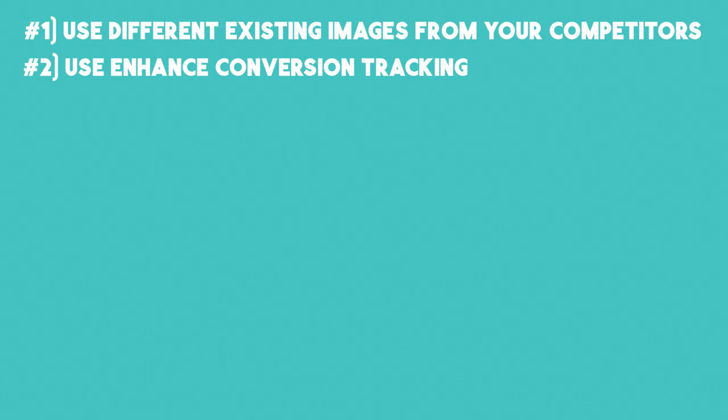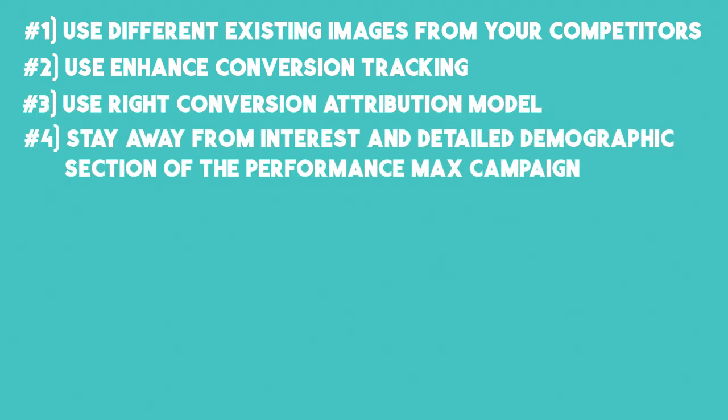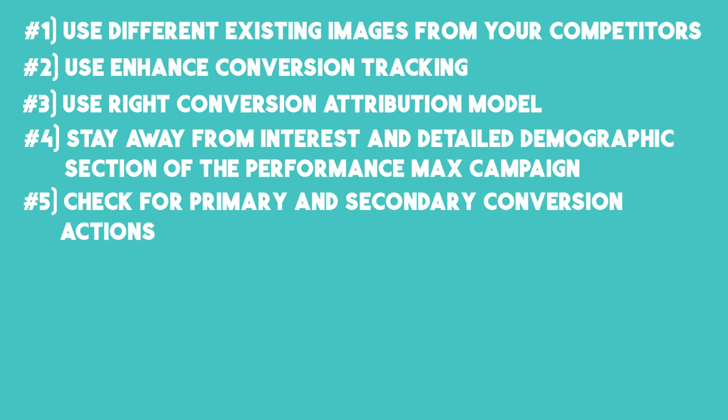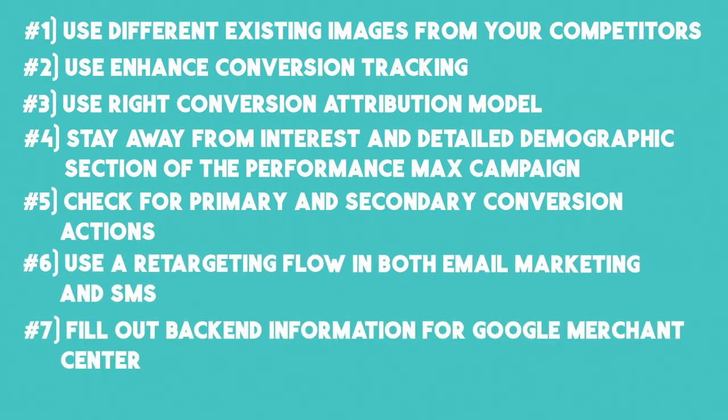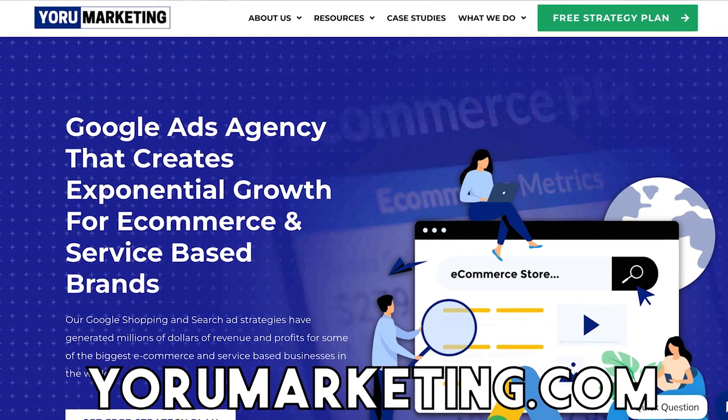To recap the seven ways to dominate Google Shopping ads: one — use different existing images from your competitors; two — use enhanced conversion tracking; three — use the right conversion attribution model; four — stay away from the interest and detailed demographic section, especially in Performance Max; five — check your primary and secondary conversion actions; six — use retargeting flows in email marketing, SMS, and advertising platforms; and seven — fill out the backend information for Google Merchant Center. If you do all seven of these things, you will be able to take your e-commerce brand to the next level.